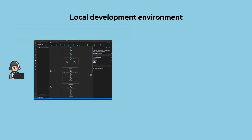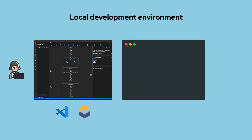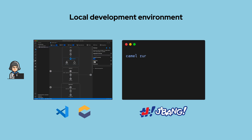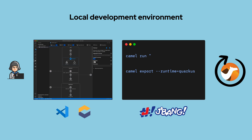Developers can use Caravan in their local development environment by installing the Caravan extension in VS Code or Eclipse-C, and run their services using JBang-powered Camel CLI with Camel main, or export and run it with Quarkus or Spring Boot runtimes.